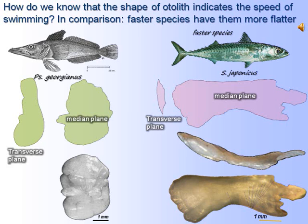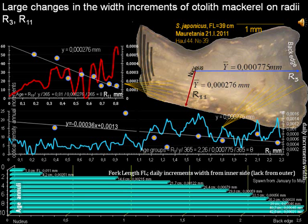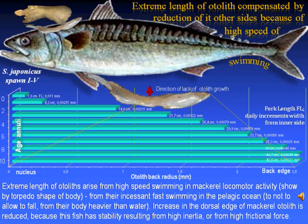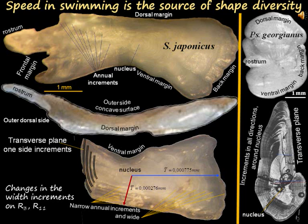How do we know that otolith shape indicates swimming speed? From comparison: faster species have more flattened otoliths. Otolith shape changes among fish species of different swimming speeds and depths. Large changes in the width increments of mackerel otolith on radii r3 and r11 are notable: on r3, large width increments; on r11, small ones, giving a length greater than height. The extreme length of mackerel otoliths arises from its high swimming speed, shown by its torpedo body shape. The lack of increments on one side is probably from pressure of swimming speed removing otolith substrate to the other side where acceleration concentrates it. Speed in swimming is the source of shape diversity.